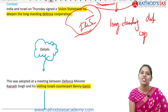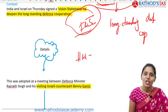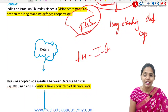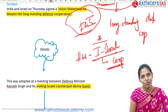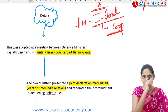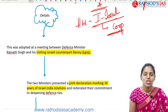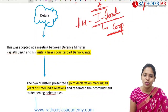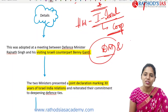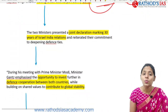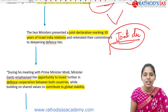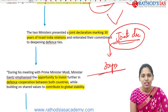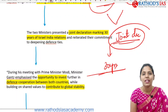Your homework today is to refer to India-Israel relations and the areas of cooperation between the two countries. India and Israel came up with a meeting between defense ministers of both nations. These two ministers presented a joint declaration marking 30 years of India-Israel state relations and reiterated their commitment to deepening defense ties.